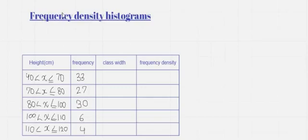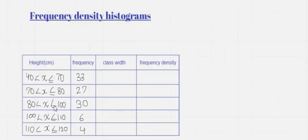Frequency density histograms are normally used when our class intervals are of unequal width. In this case, I have written down the heights of different buildings. The class intervals are 40 to 70, 70 to 80, 80 to 100, 100 to 110, and 110 to 120. This is the frequency table in which I have written down the frequency of the heights.